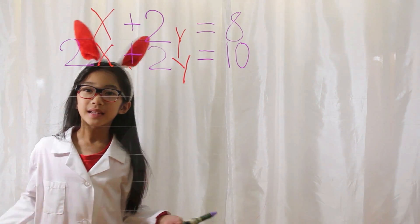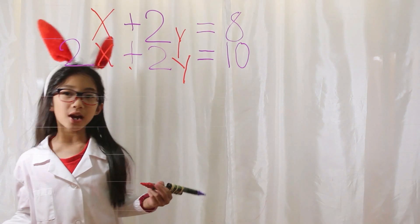This is called the subtraction method. The first thing you need to do is subtract the two equations.